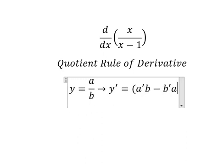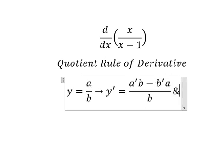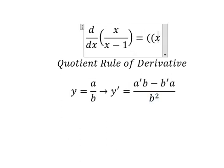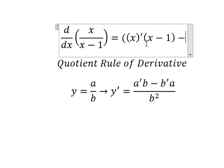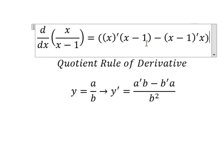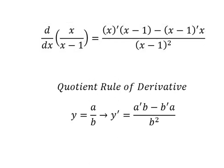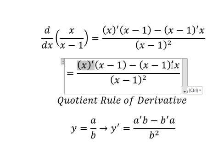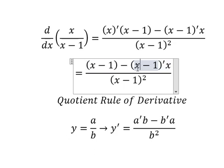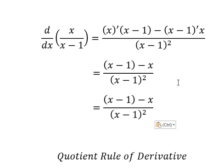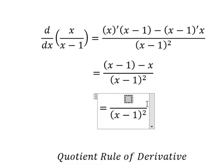We apply this formula here. This one we have number one, this one we have number one, and this one is about the constant so you get number zero. So s minus s gives us zero, so we have negative number one.